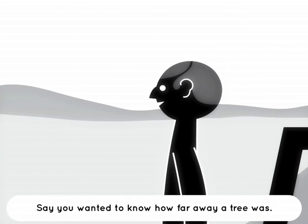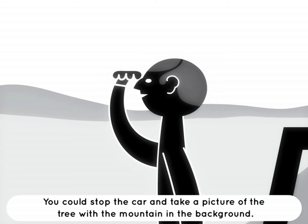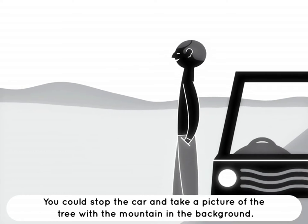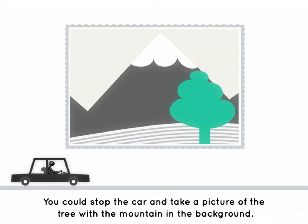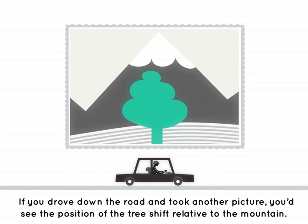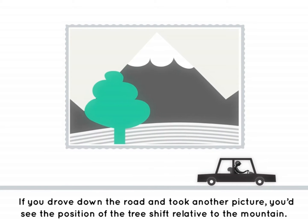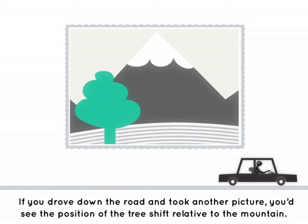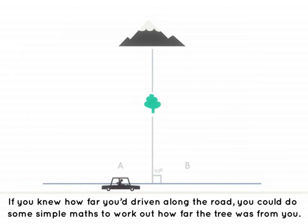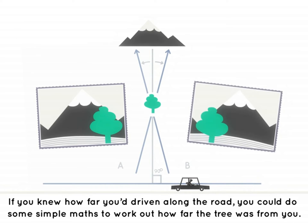Say you wanted to know how far away a tree was. You could stop the car and take a picture of the tree with the mountain in the background. If you drove down the road and took another picture, you'd see the position of the tree shift relative to the mountain. If you knew how far you'd driven, you could do some simple maths to work out how far the tree was from you.